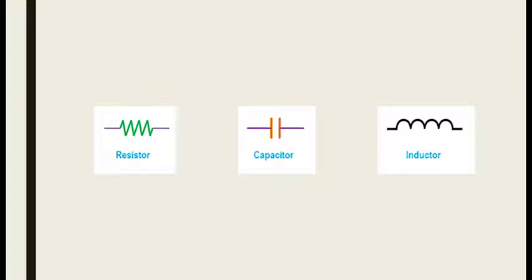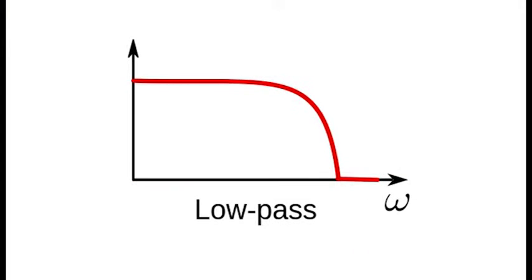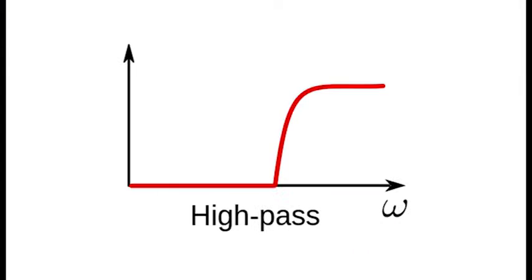There are four main types of filters: band stop, band pass, low pass, and high pass.